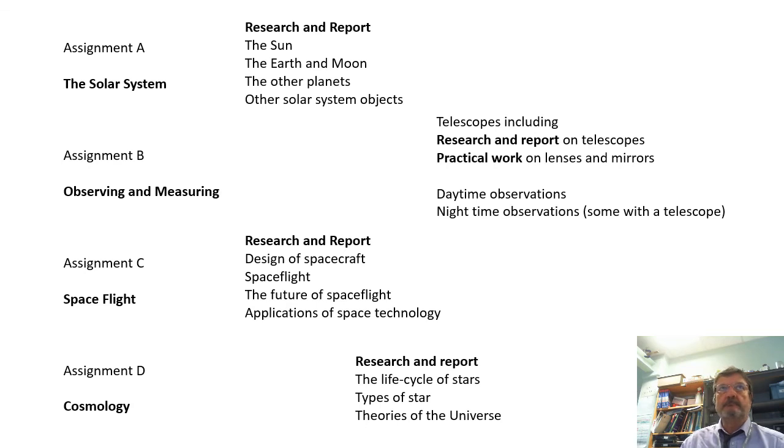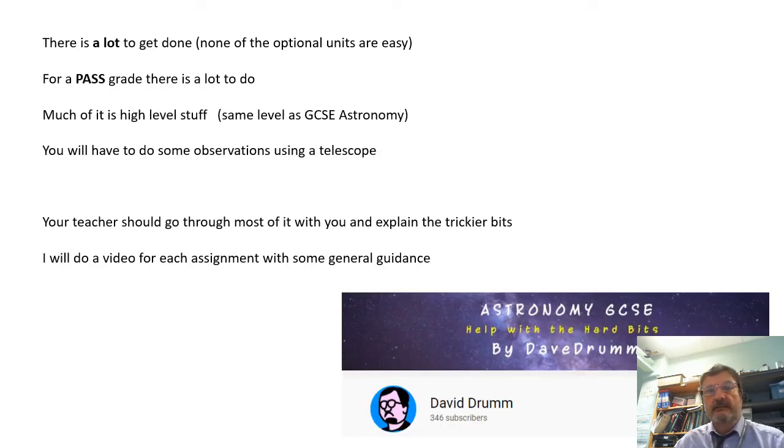There is a lot to get done. None of the optional units are easy. I'm a physics teacher—I wouldn't have a clue with the biology ones and the chemistry ones. I'm a physicist; I teach A-level physics. Even for a pass grade, there's a lot to do, and much of it is pretty high-level stuff. I teach GCSE astronomy, and most of the GCSE astronomy course is in this unit.